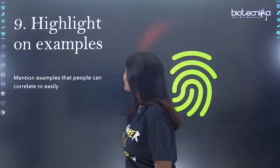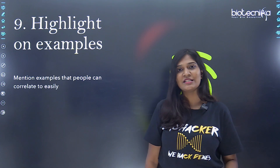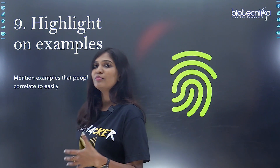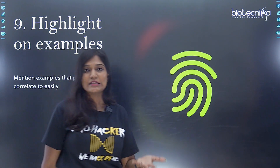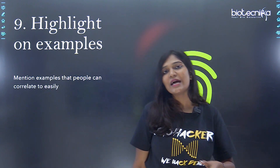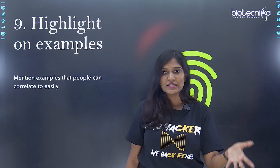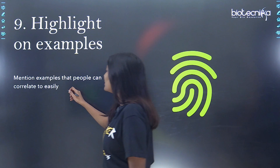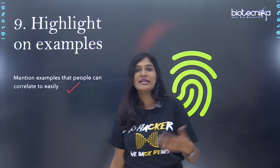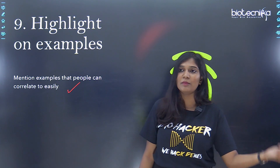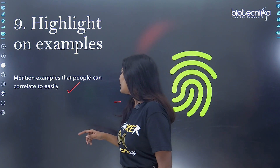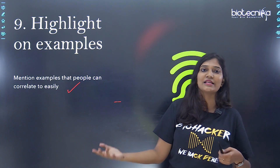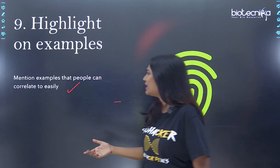The next tip: highlight on examples. The scientific process involves highlighting old and new information, context, and linkages. A non-science reader will not be able to correlate when you talk scientifically, so you have to give examples to help them understand. For instance, you can give an example of how many people have been affected by a disease over a long time and an example of someone who has recovered from it.